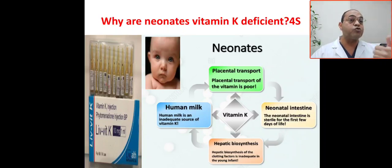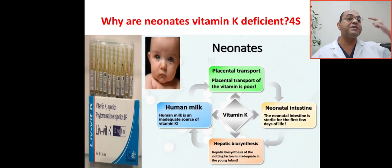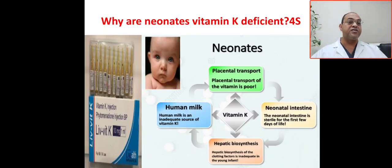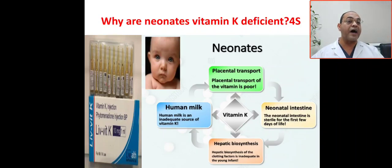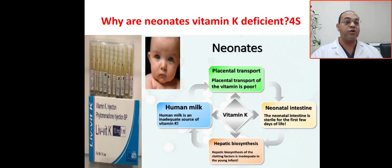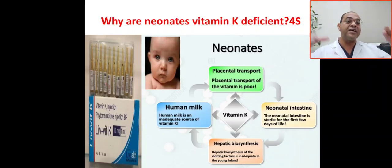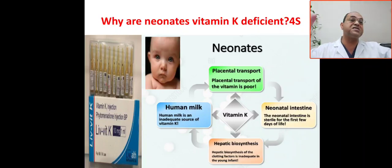The second reason is the placental cause: placental transport of vitamin K is poor, with only a small amount transferred. The third reason is the neonatal cause: the neonatal intestine is sterile for the first few days of life. Also, hepatic biosynthesis of clotting factors is inadequate in young infants.